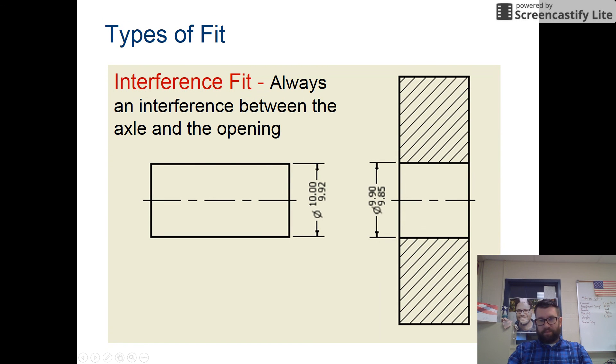Interference fit. The minimum size of the axle is 9.92, but the maximum size is 9.90. Therefore, if the parts are manufactured correctly, the axle will always be larger than an opening. This type of fit might be called a press or a force fit so that the parts can be pressed together in order to assemble them.